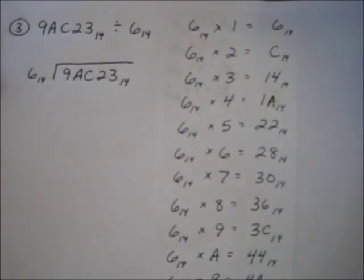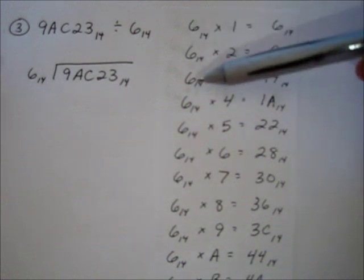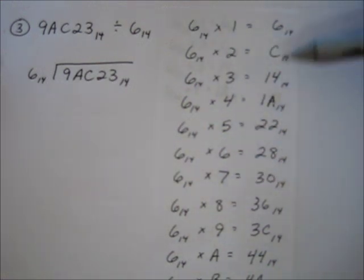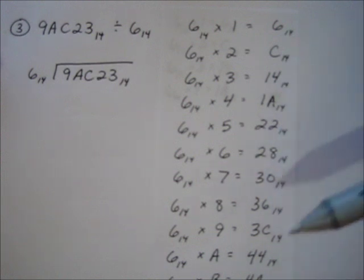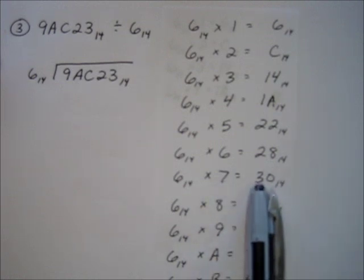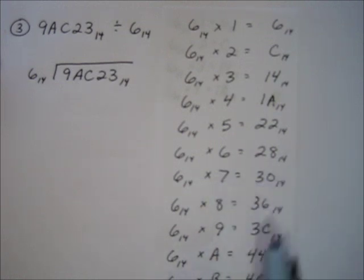The idea here is to continue making a chart of what 6 times different numbers is equal to in base 14. You can see I continued working all this out. You probably need a calculator to do all this, so this takes quite a bit of time. For instance, when you're down here on this line, 6 times 7, that's 42. If you want to write that in base 14, it's exactly 3 fourteens with 0 left over, so it's equal to 30. But now let's try to actually do the division.